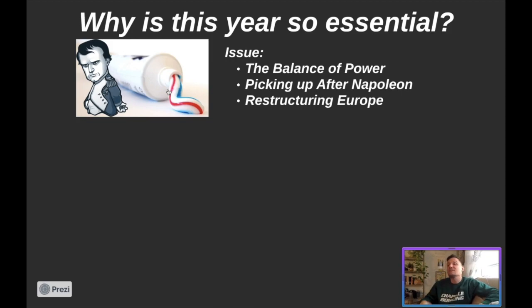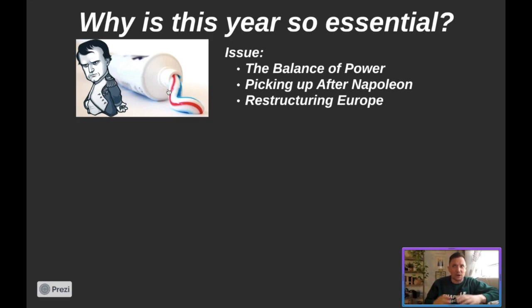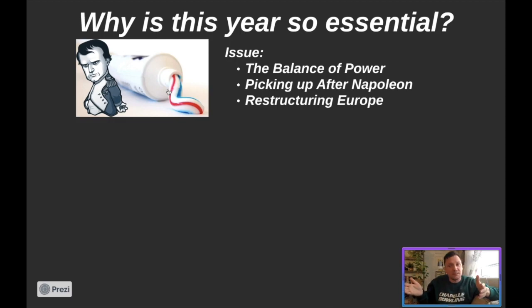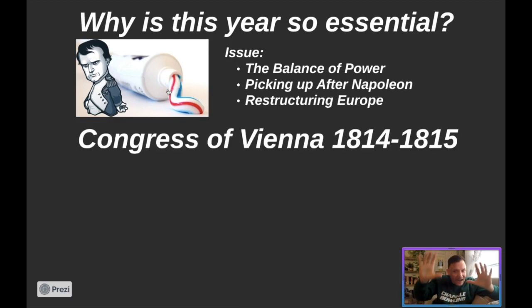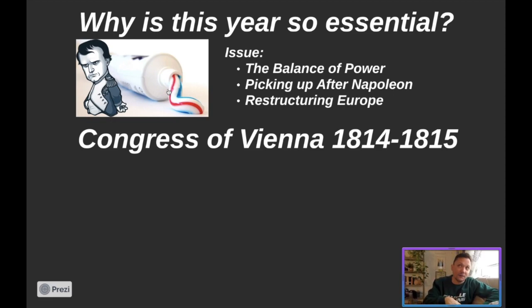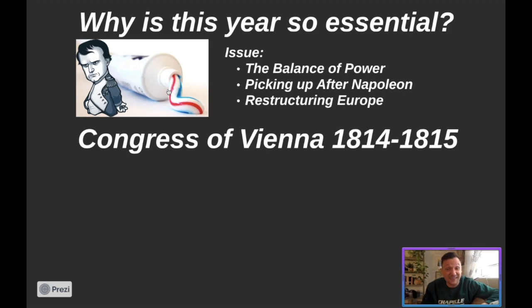We also have to figure out how to restructure, because we used to have a Holy Roman Empire, but now that Napoleon's gone and the boundaries are going to be redrawn, do we put the Holy Roman Empire back from the Confederation of the Rhine, or do we change this up a little bit? We have to figure out: are some countries going to get bigger? What do we do with Poland? Napoleon brought it back, but are we going to keep it or get rid of it? Fun fact: we'll get rid of it.